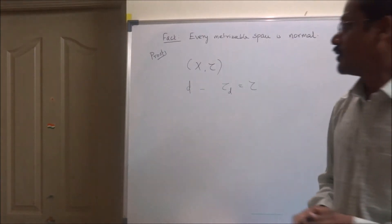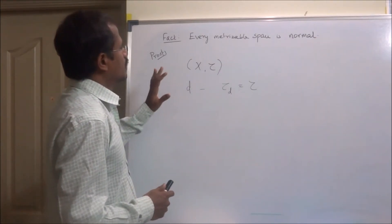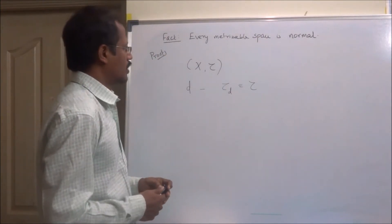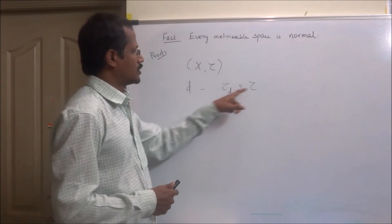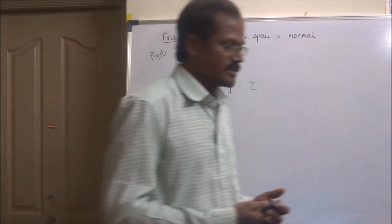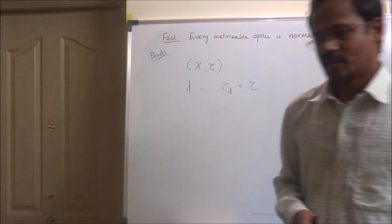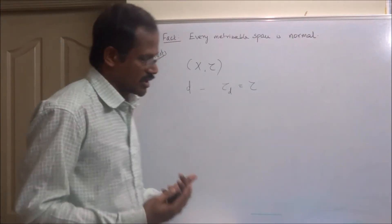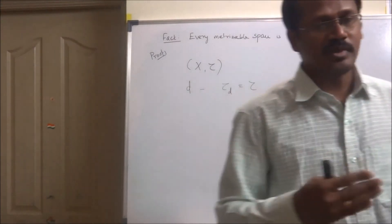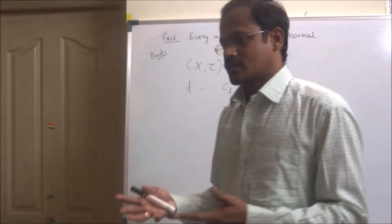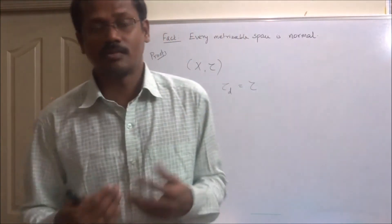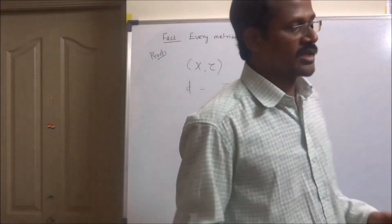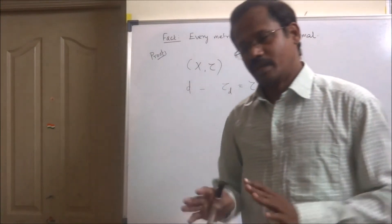The topology is given by the metric. Now, τ equals τ_X,d actually says that every open set in X is open in the metric space X, and every open set in the metric space is nothing but an open set in X. There is no distinction between open sets in X as a topological space and open sets in X as a metric space. Whenever I say a set is open in X, it means they are open in the sense of the metric also.